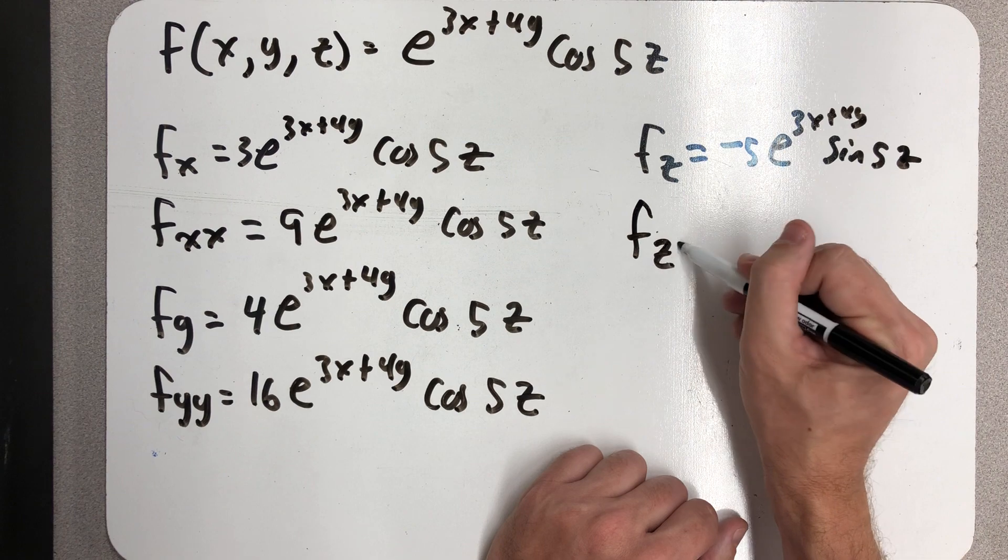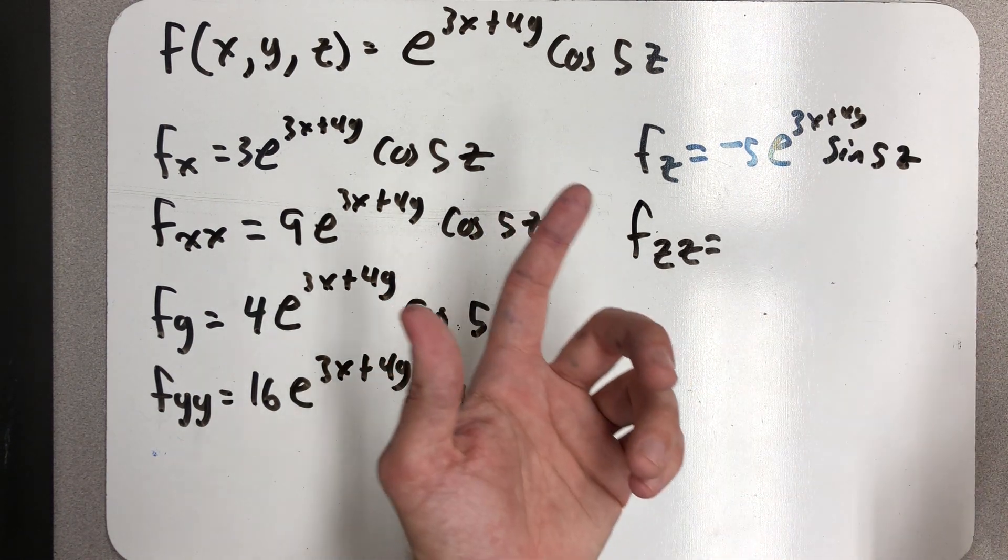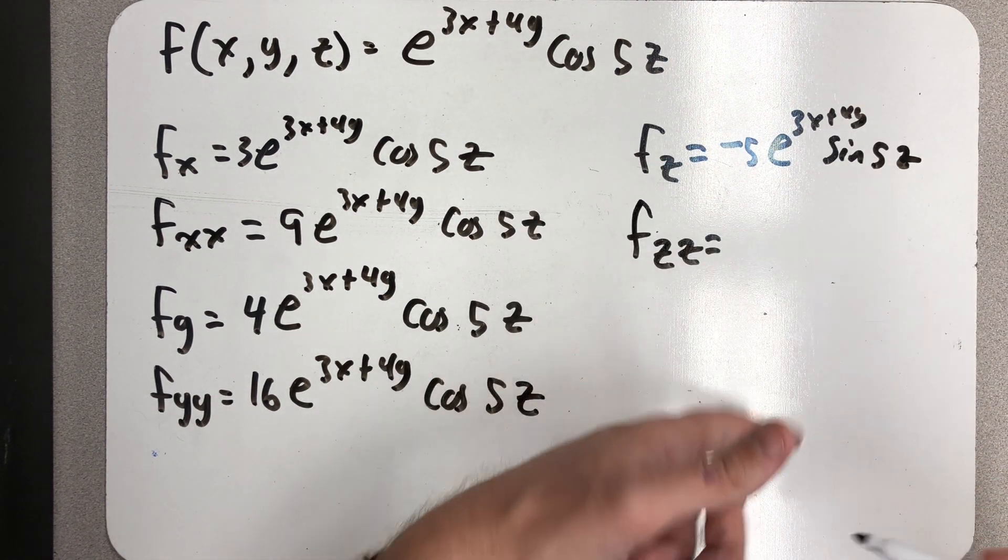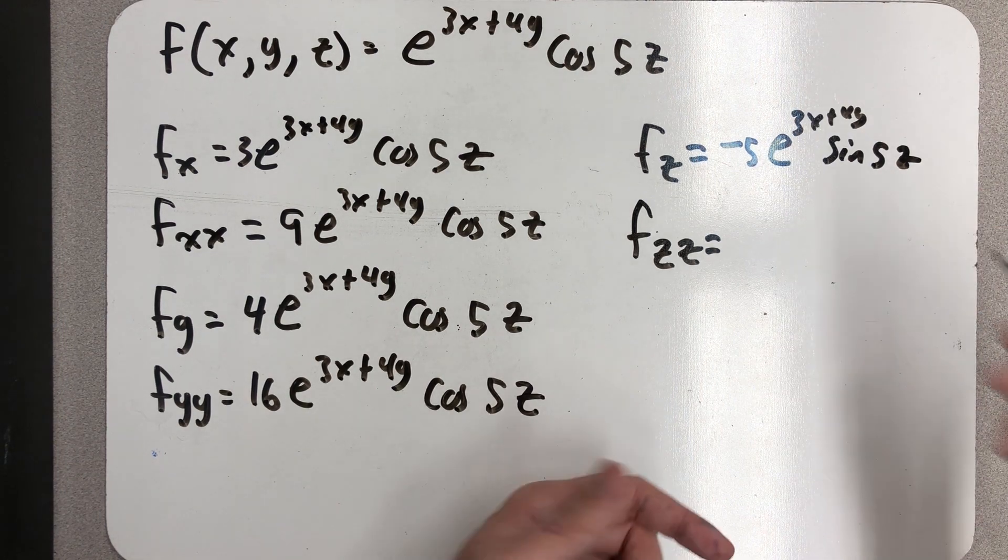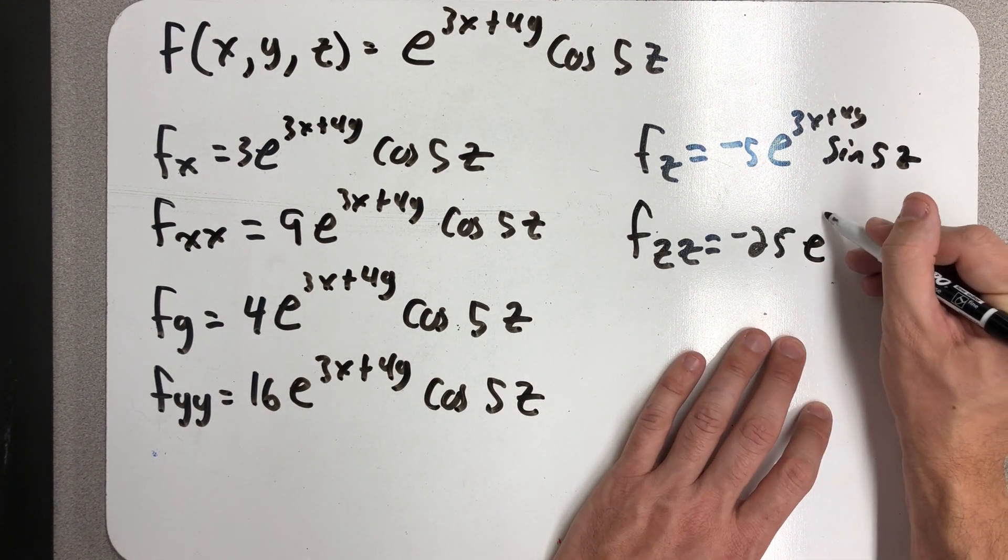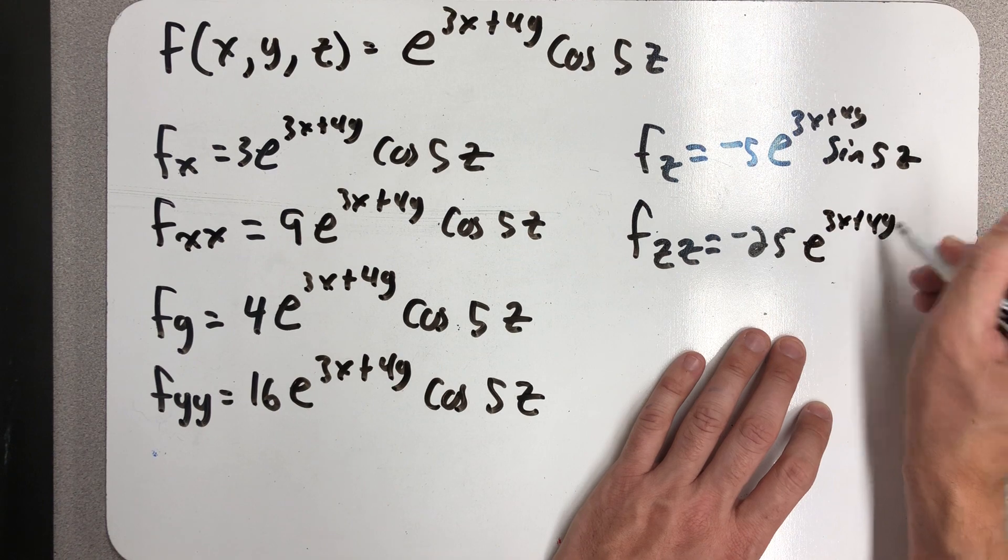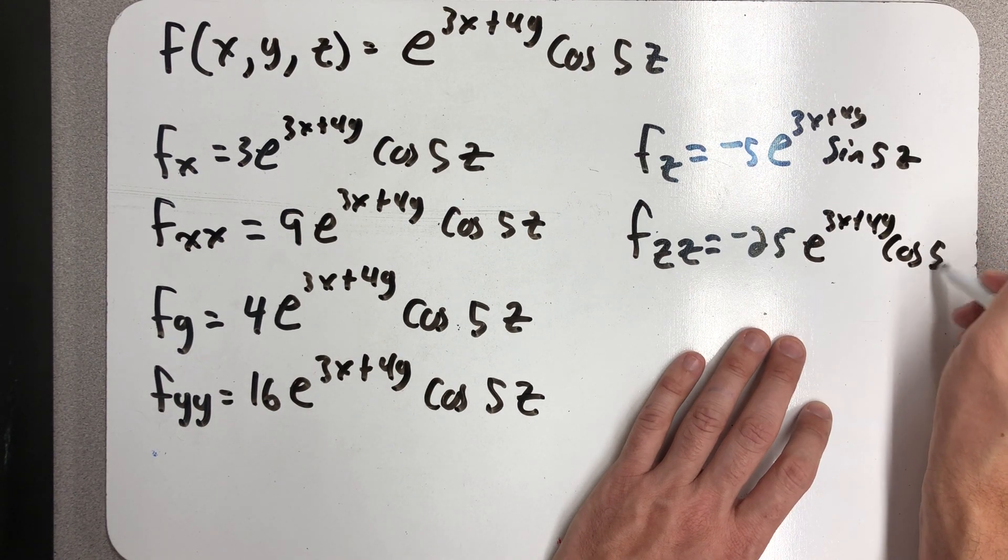Repeat that process—the second partial with respect to z. Well, I'm going to do the same thing, so the sine is going to become a cosine, and I'll multiply by another 5. I'll get minus 25 e^(3x+4y) times cosine of 5z.